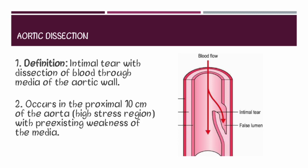The aortic dissection occurs in the proximal 10 cm of the aorta, which is a high stress region, and it occurs in the aorta with a pre-existing weakness of the media.